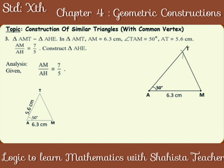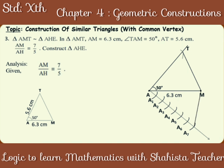Draw an angle, preferably an acute angle from point A, since A is the common point of both the triangles. Draw 7 arcs of equal measurements from point A, since the ratio is 7 is to 5 and 7 represents the bigger triangle. Name them as A1, A2, A3, A4, A5, A6 and A7. Join A7 with point M, since the ratio is 7 is to 5 and 7 represents the given triangle. Now, draw a parallel line to segment MA7. This parallel line meets segment AM. This point is H. Draw a line parallel to side TM from point H. This parallel line will meet segment AT. Mark this point E.